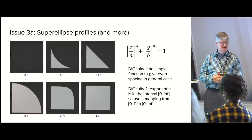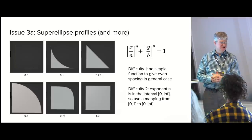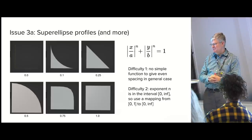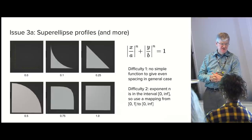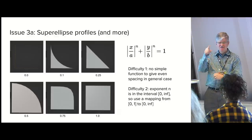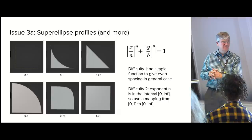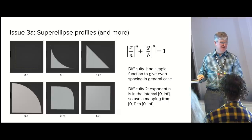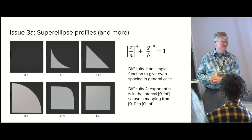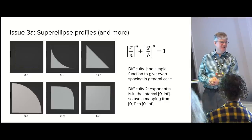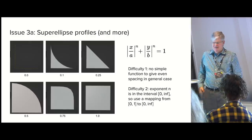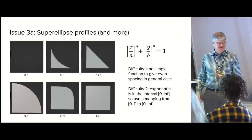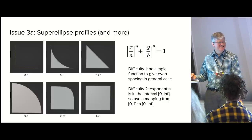Next there are profiles that aren't just circles — there are super ellipse profiles. Once you do this, you realize there's another math problem: how do you get even chord lengths on the super ellipse? There's no real easy formula to do that. So there's actually an iterative optimization in bevel to figure out how to get equal chord lengths along the super ellipse arc. And then there's a whole set of other issues with custom profiles, which Hans could tell you about — I'm not going to get into them today.